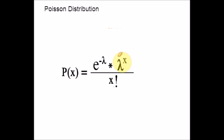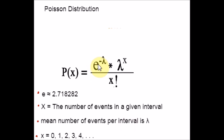If we let X, the capital X, as the number of events in a given interval, and this lambda is the mean number of events per interval. The probability of observing X events in a given interval will be given by e raised to negative lambda times lambda raised to X divided by X factorial. X can be any number from 0 to infinity. And e is a mathematical constant, approximately equal to 2.718282.